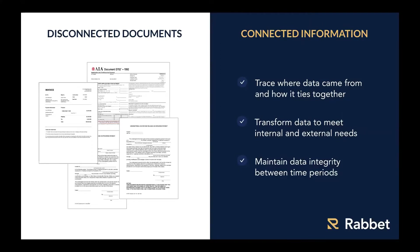With connected information, you can transform it for any application — a draw summary for your lender, an internal report, or a report for your investment committee — and slice and dice it any way you need. When information is connected you also maintain data integrity between time periods, eliminating the pain of rolling forward spreadsheets and verifying reference cells. You have a project memory that works for you.